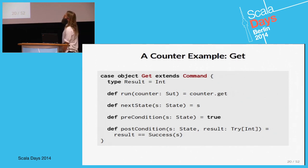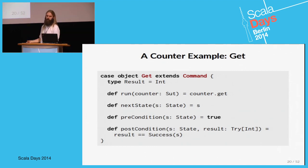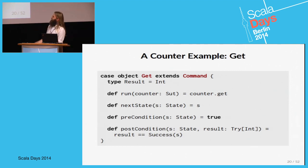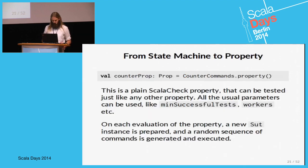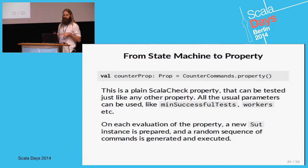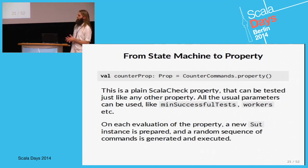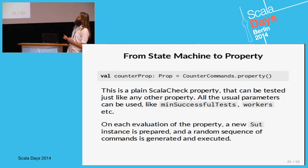The get command is not that difficult either. We don't do anything to the state because get shouldn't affect state in any way, and we just want to get the current value back. With all this in place, ScalaCheck can generate a plain ScalaCheck property out of this model using the property method of the Commands trait.